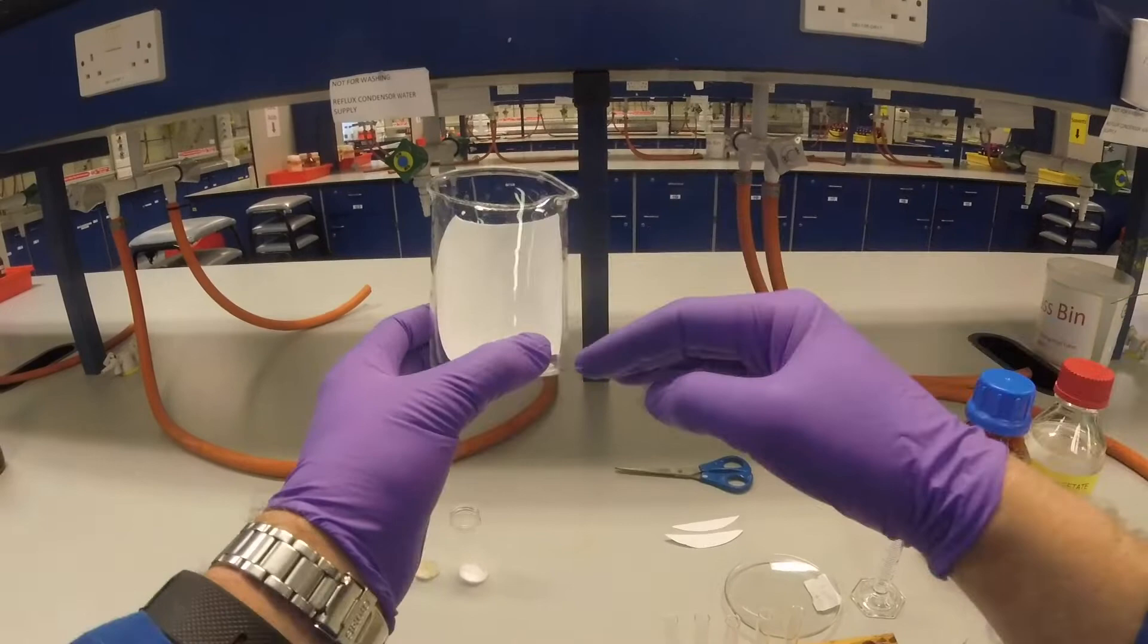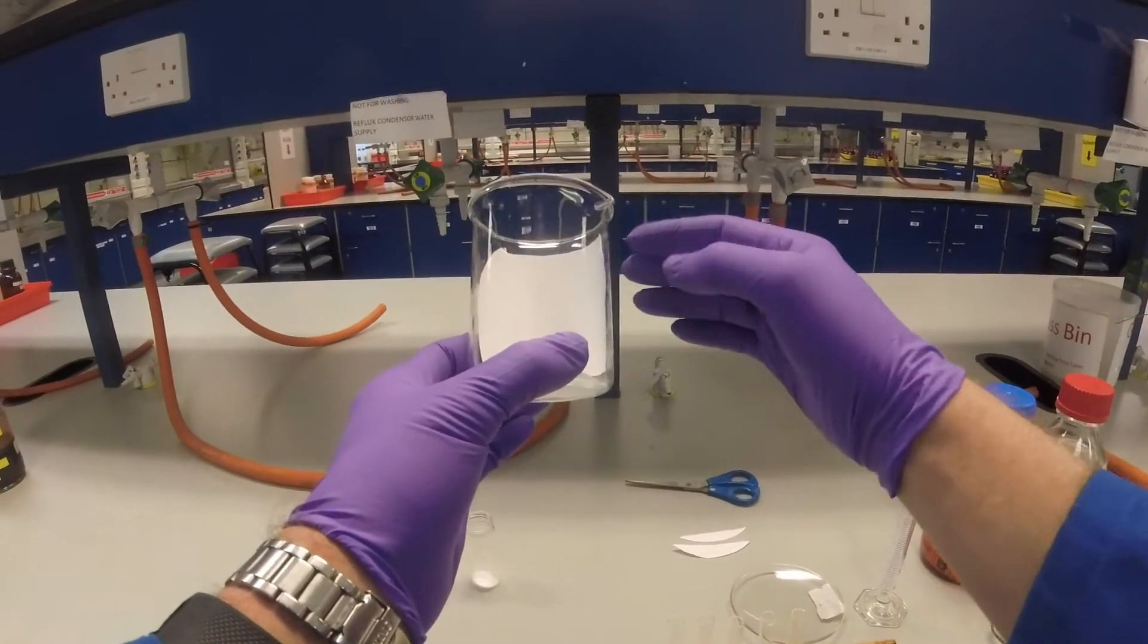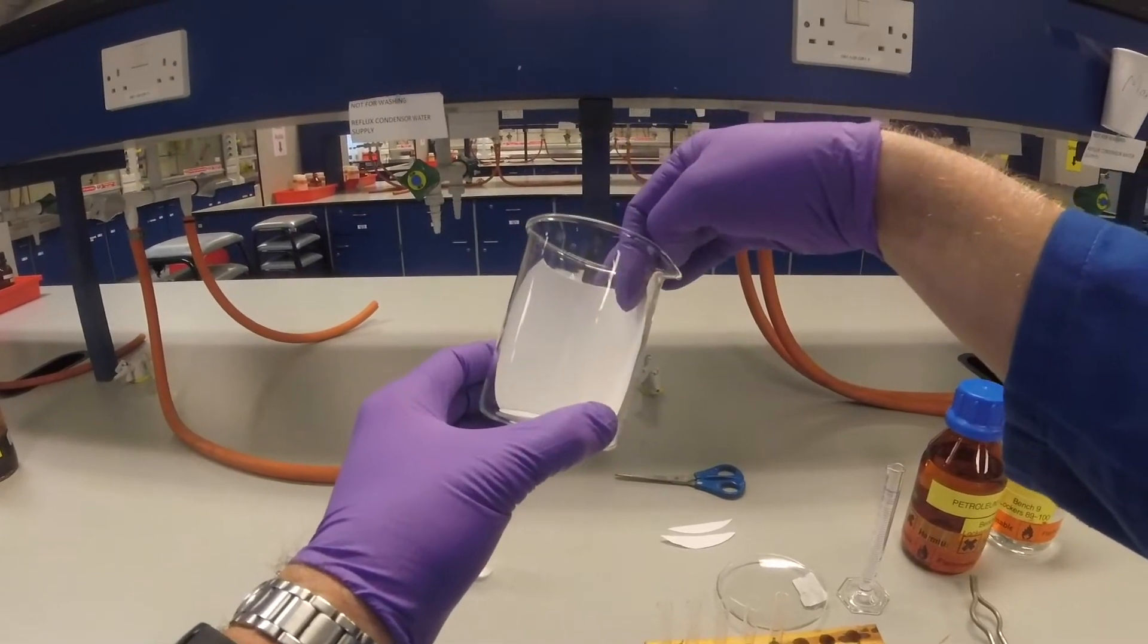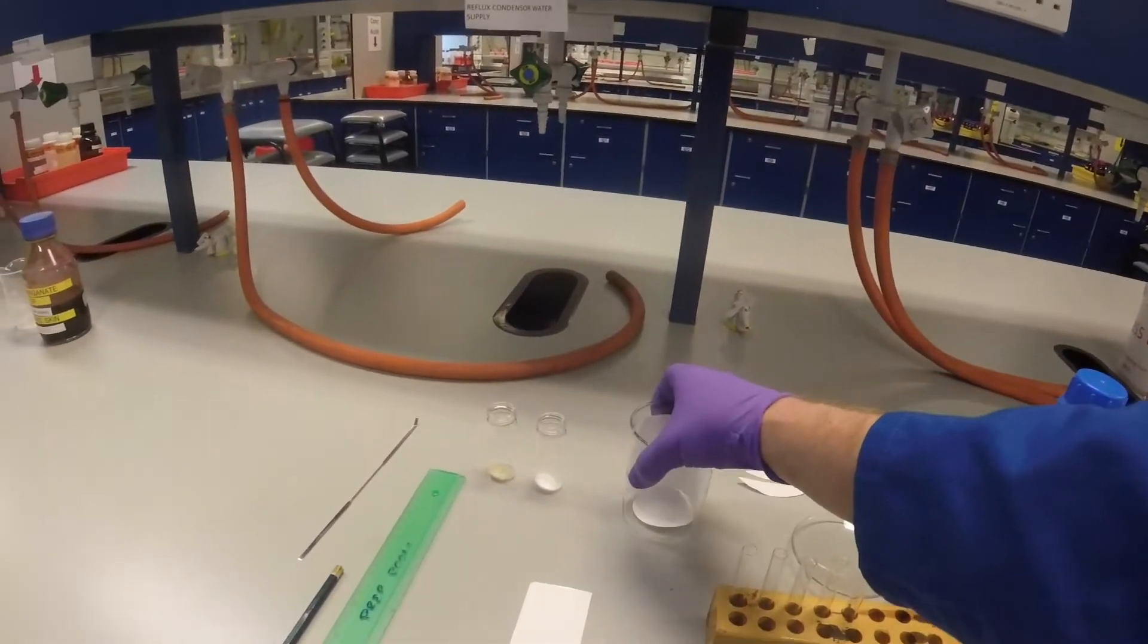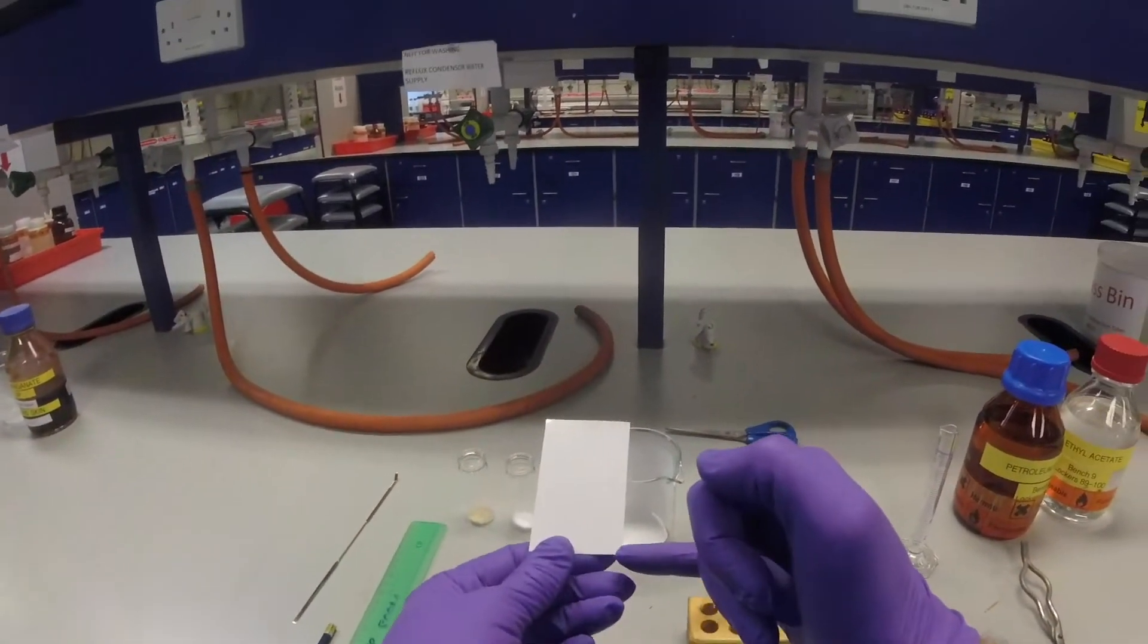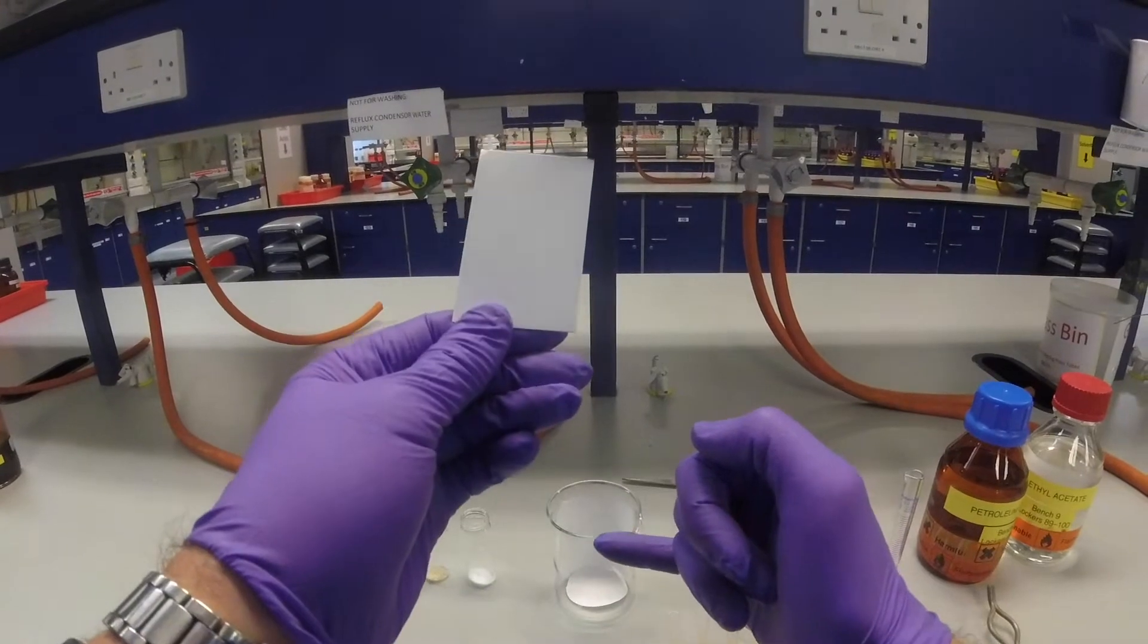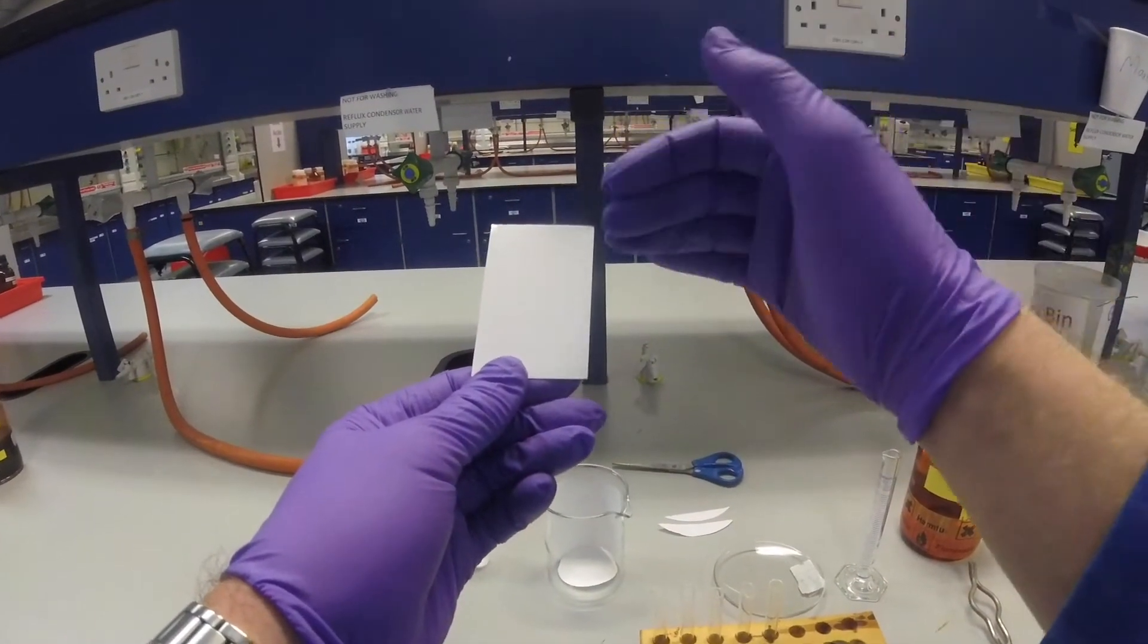When you put your solvent in the TLC tank and it runs up the plate, it'll also run up and soak this piece of filter paper, which means the atmosphere in the TLC tank will become saturated with solvent so that when your solvent is going up your TLC plate, it won't evaporate into the atmosphere around, it will stay there.